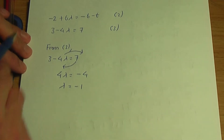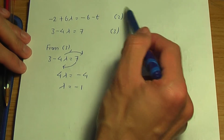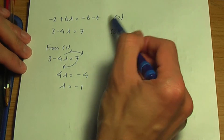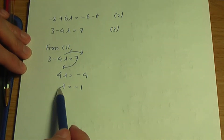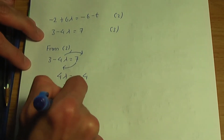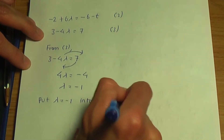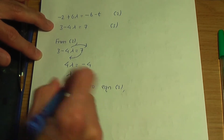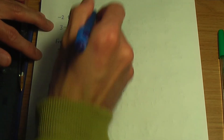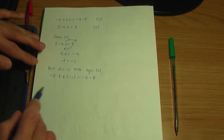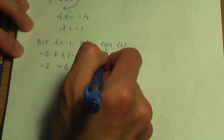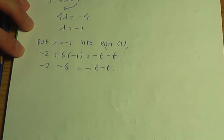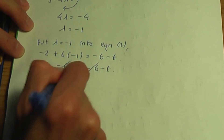Now let me put the value of lambda into equation 2. Remember, once you've selected equations 2 and 3 to solve simultaneously, you only use those to find the scalar values. Putting lambda equals minus 1 into equation 2: minus 2 plus 6 times minus 1 equals minus 6 minus t. So minus 2 minus 6 equals minus 6 minus t. Cancelling the minus 6 on both sides gives t equals 2.